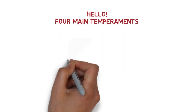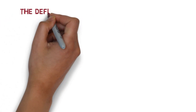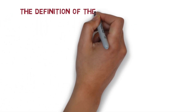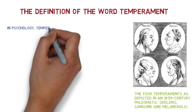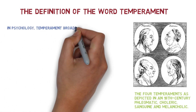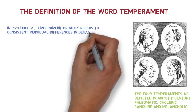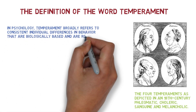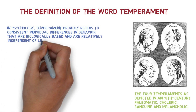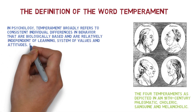This is Amran Surenovich and today I'm going to tell you about four main temperaments. But first of all, let's find out the definition of the word temperament. In psychology, temperament broadly refers to consistent individual differences in behavior that are biologically based and are relatively independent of learning, a system of values and attitudes.